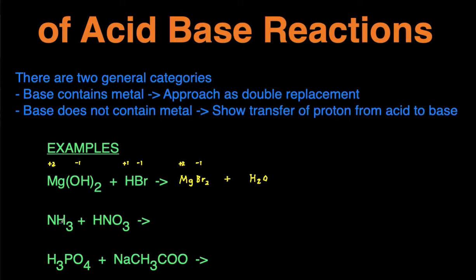Next one we have NH3 reacting with HNO3. This is the acid because there's H in front, so then this must be the base. We want to look at the base and see if it contains a metal. This one does not contain a metal, so that means it's the second category. We're going to show the transfer of protons from the acid to the base. The acid is going to give up an H+, essentially a proton, and then the base is going to pick that up to help us predict the products.